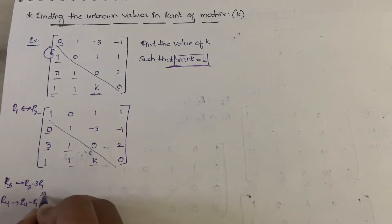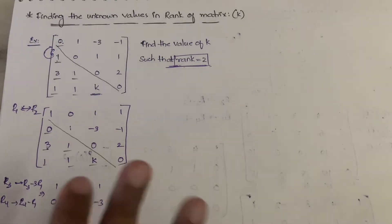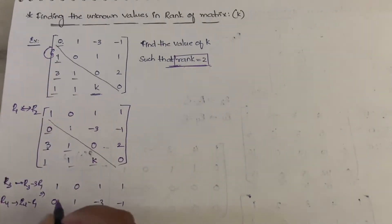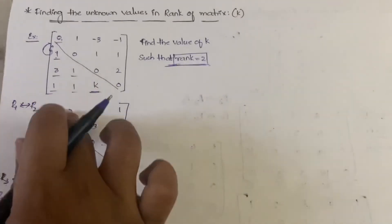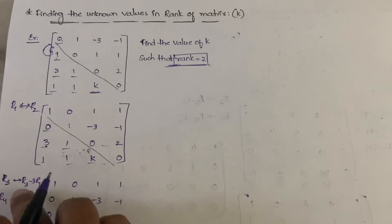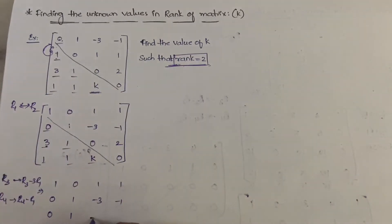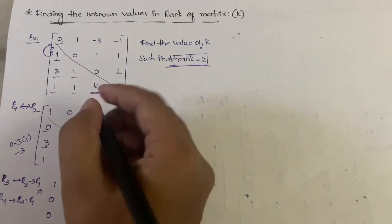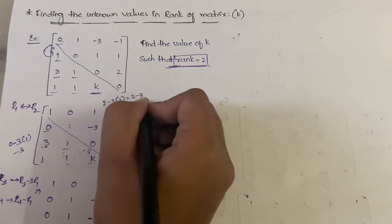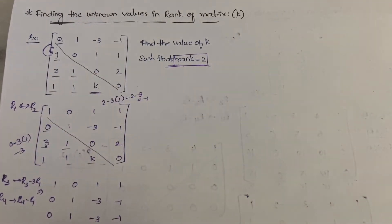After the operations, the matrix becomes: R1 = [1, 0, 1, 1], R2 = [0, 1, -3, -1]. For R3 (R3 - 3·R1): 3 - 3×1 = 0, 1 - 3×0 = 1, 2 - 3×1 = -1. For R4 (R4 - R1): 1-1 = 0, 1-0 = 1, k-1, and 0-1 = -1.